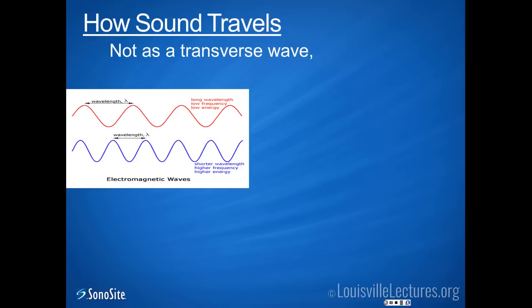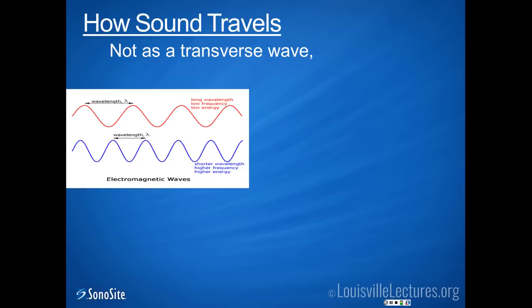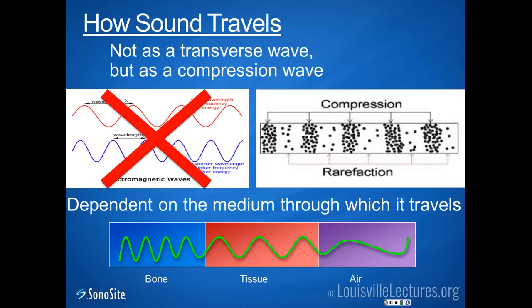Let's review how sound travels. You've likely seen this before — electromagnetic waves like light or heat radiate as a transverse wave, where the distance between two crests or two troughs is a wavelength. But sound doesn't travel that way. Sound travels as a compression wave, where instead of peaks you have areas of compressed material called compression, and what would correspond to a trough are areas of fewer density called rarefaction. Despite this, we tend to demonstrate ultrasound in the fashion of a transverse wave for simplicity, but remember that sound travels as a compression wave.